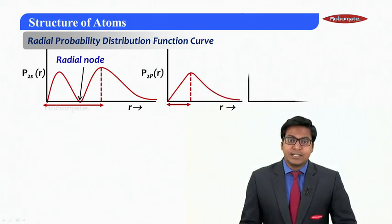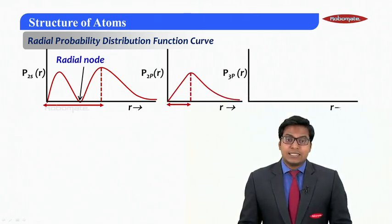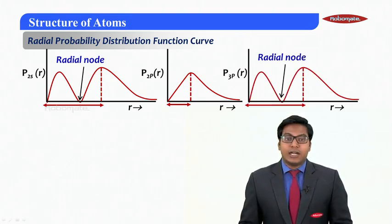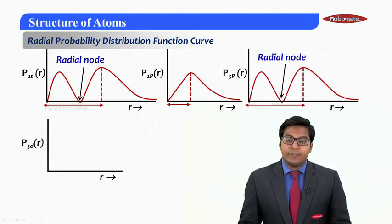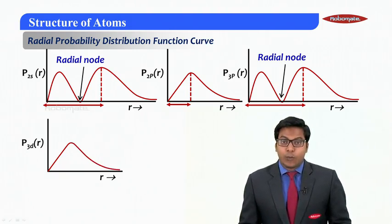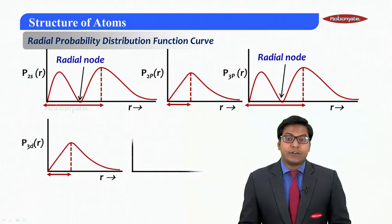Similarly for 3p you would see it is quite similar to that of 2s. Similarly if I keep drawing it, again with a radial node here, and if I draw it for 3d, again you would see it is quite matching to that of 1s and 2p.